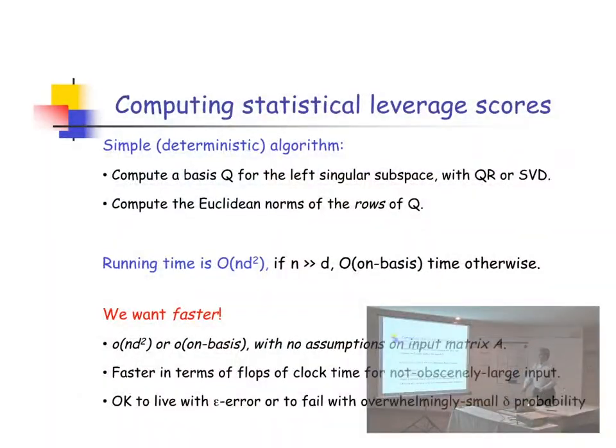So how do you compute these things? Do SVD or QR. It takes high dimension times low dimension squared time. N times D squared time. So do QR or SVD. You get a matrix Q and evaluate the Euclidean norm to that row in Q. That takes ND squared. High dimension times low dimension squared.